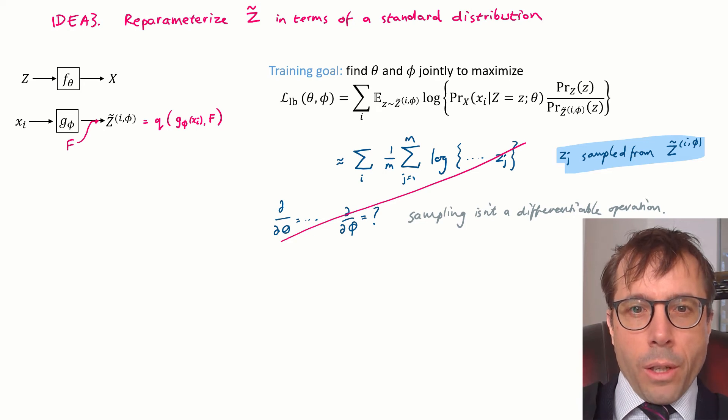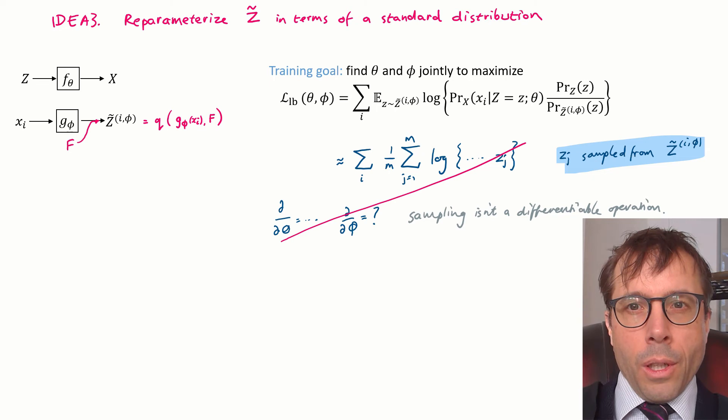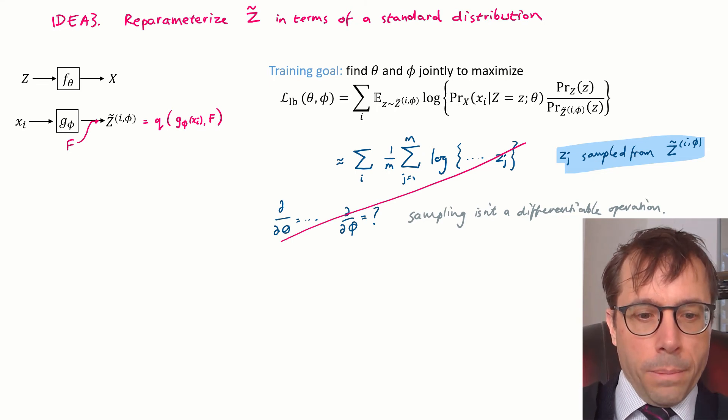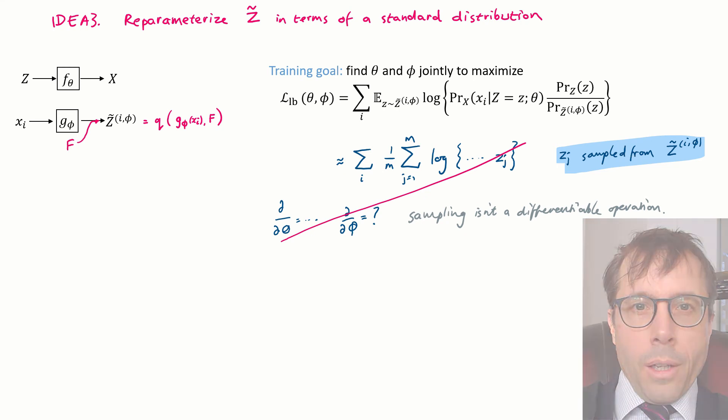There's a very nifty workaround called the re-parameterization trick. We just rewrite Z̃ in terms of a standard random variable. Let's write Z̃ as some function q applied to the parameters g_φ(xᵢ) and ε, where ε is some standard random variable, for example, a normal. Then the expectation over Z̃ can be written as an expectation over ε, and then we Monte Carlo it. And what we end up with is differentiable with respect to θ and to φ. It works this time because our random sampling is something from ε, not from Z̃, and the distribution of ε is stable. It doesn't depend on φ.